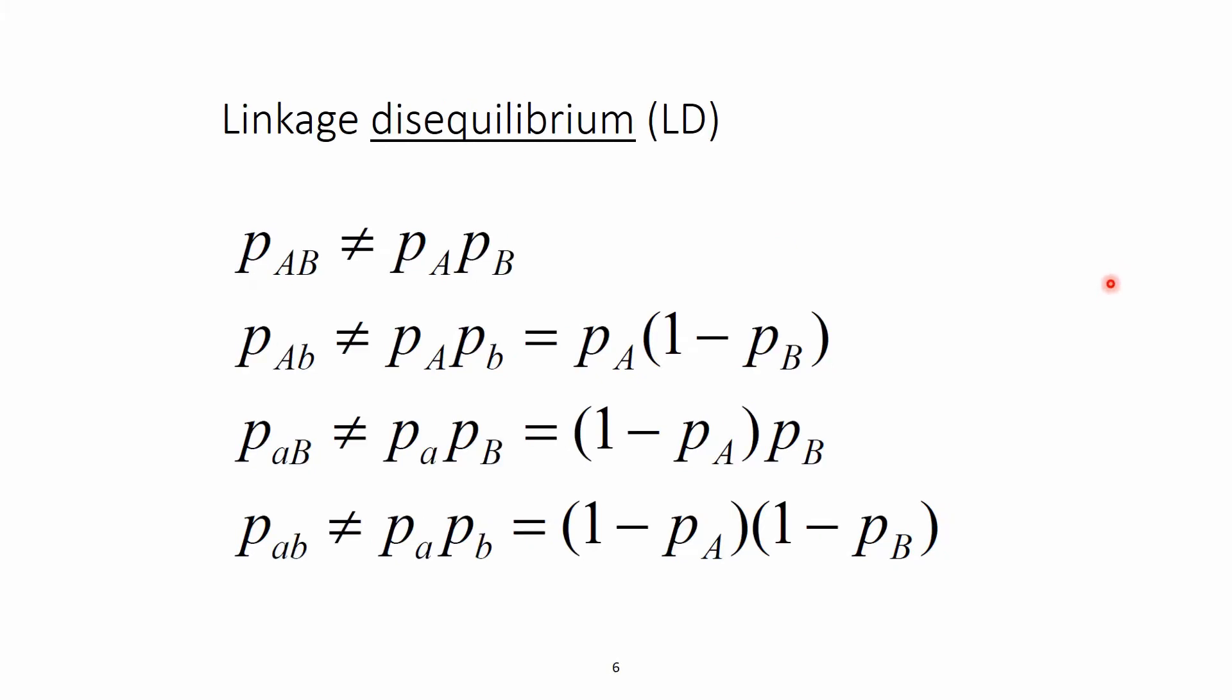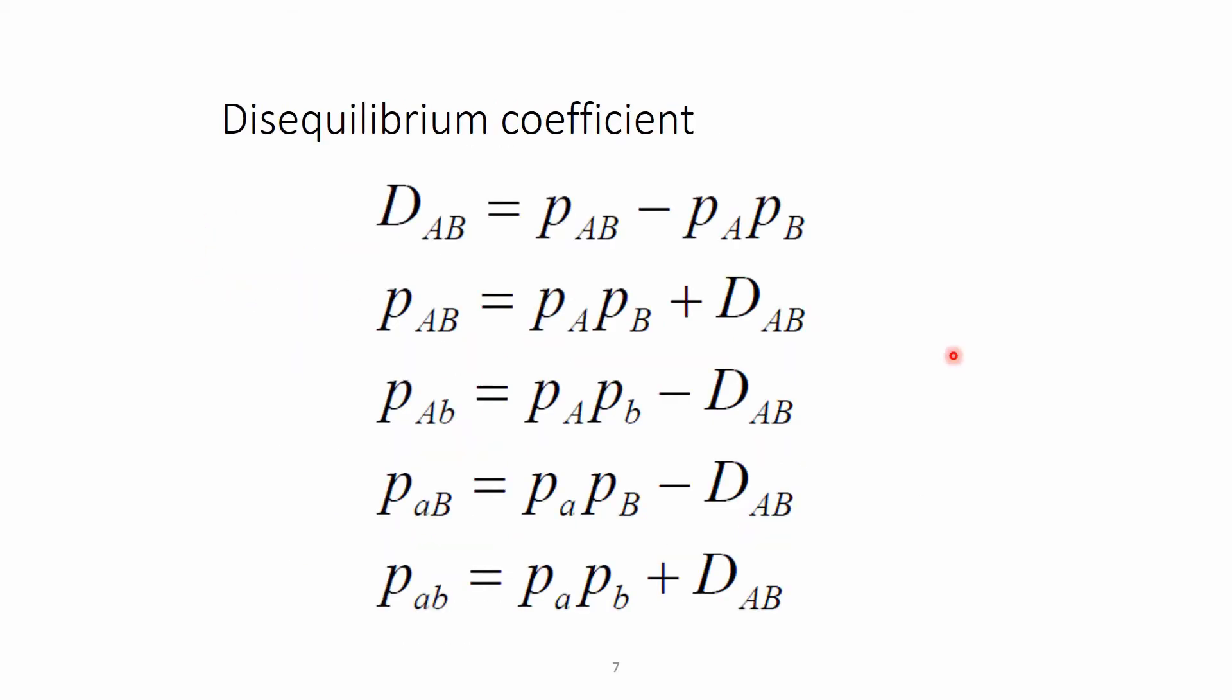In case of linkage disequilibrium, however, these equations do not hold true. In other words, from the proportions of alleles, we cannot compute the proportion of the genotypes. We cannot compute this because there is a difference between these two metrics that is the disequilibrium coefficient, or capital D, and it can be computed as the proportion of AB together minus the proportion of A times proportion of B. And when we include this disequilibrium coefficient to the equations as before, we get the proportions of the genotypes. So in other words, this D or the disequilibrium coefficient is a measure of the linkage disequilibrium or a coefficient that can be used to express it.